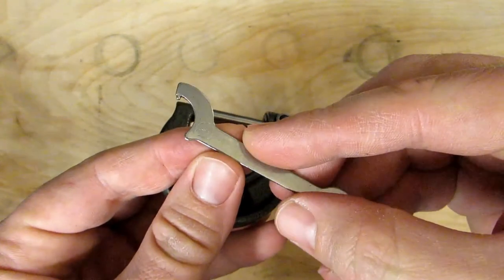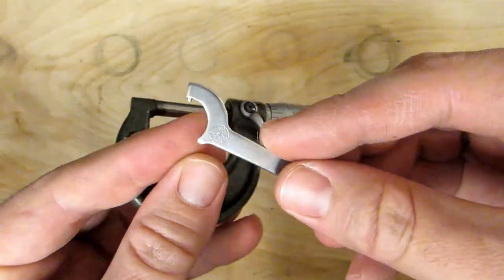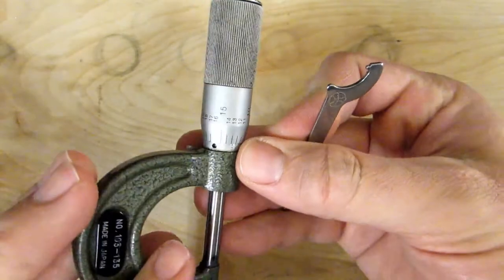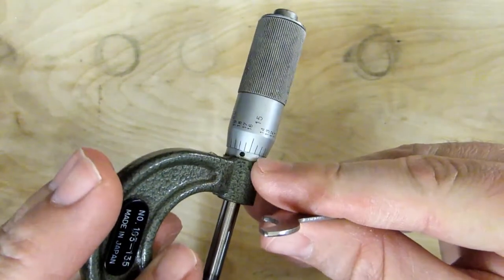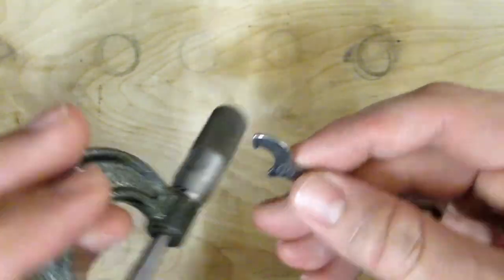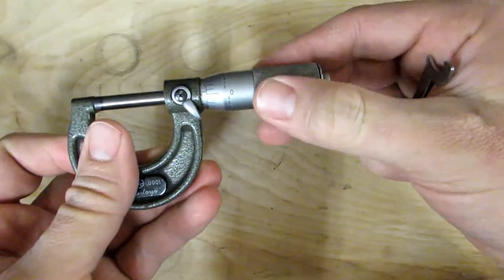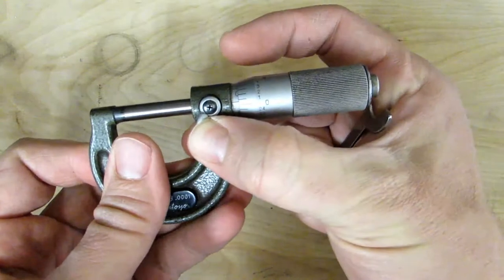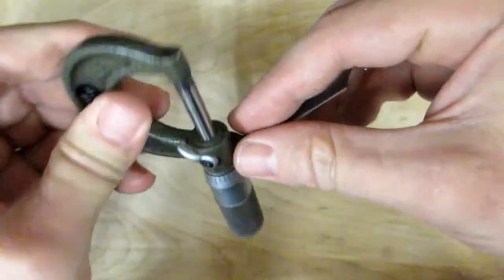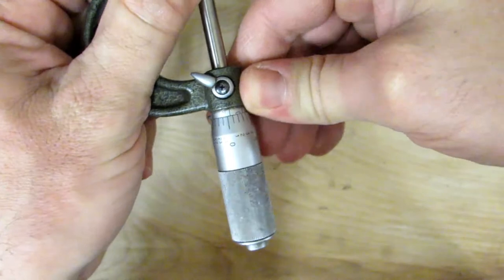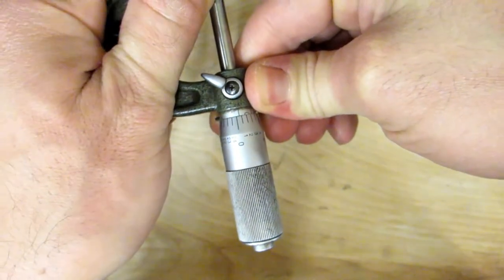All micrometers are going to come with a little adjusting spanner like this. It's a pin spanner. And there's a hole on the back side of the barrel that that pin goes into. So you would put that in there. Let's make sure that's totally closed. I usually put the lock on as well just so I don't bump the thimble. And then you're going to adjust this so it actually reads zero.